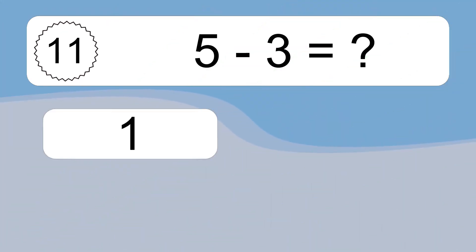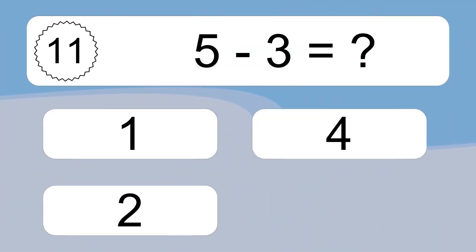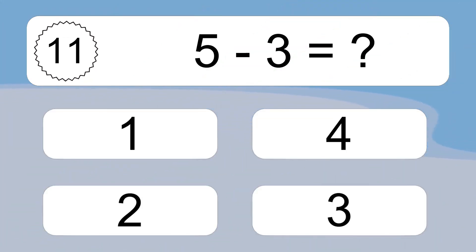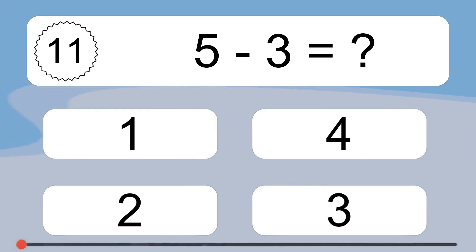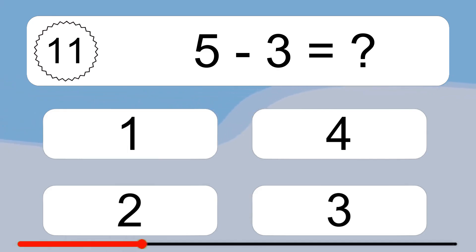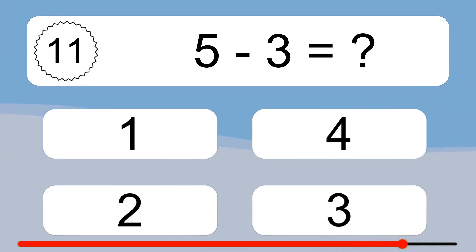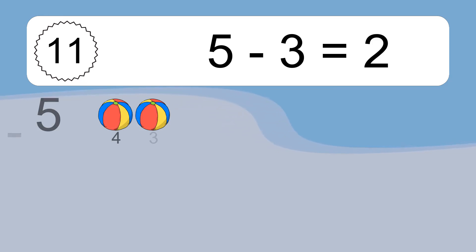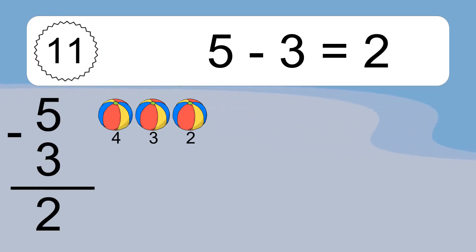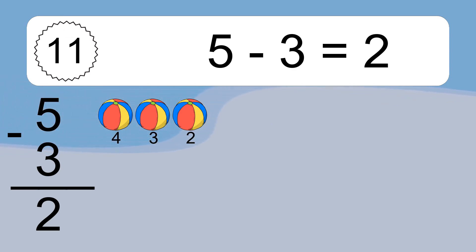5 minus 3 equals what? 5 minus 3 equals 2. Let's count it: 4, 3, 2.